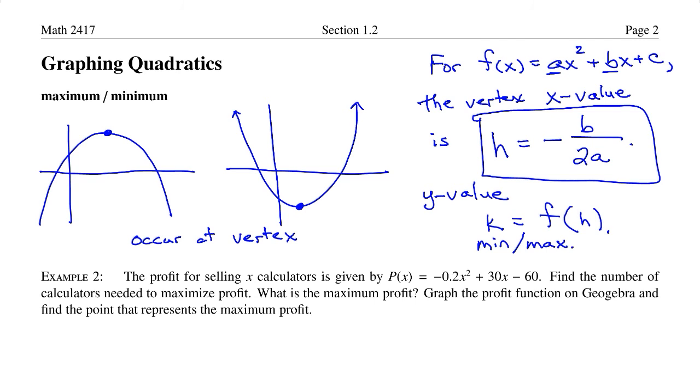We know the orientation of the graph based on the value of a. That is the coefficient of the x-squared. If the a is negative, less than zero, then the parabola opens down, and we get a maximum. And if a is positive, then the parabola opens up, and we get a minimum.